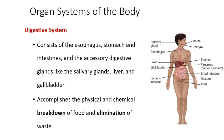The digestive system is there for ingesting food, breaking it down and digesting it, absorbing those nutrients across the intestinal wall and into the bloodstream so that those nutrients can get to all of your cells, and then eliminating whatever is left over that's not useful as waste products.